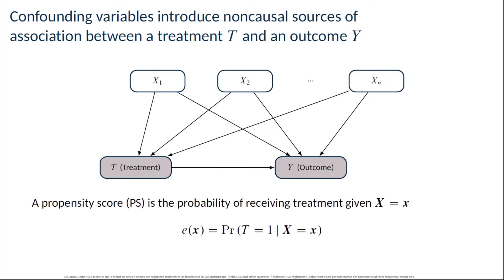One nice way of illustrating this idea is to use a causal diagram to represent the data generating process. In a causal diagram, nodes represent variables, and the directed edges between nodes represent causal effects. In this figure, the variables x1 to xn are all common causes of the treatment t and outcome y. The variables x1 to xn are therefore all confounders, and unbiased estimation of t's causal effect on y from data generated by this process would require adjusting for these variables.